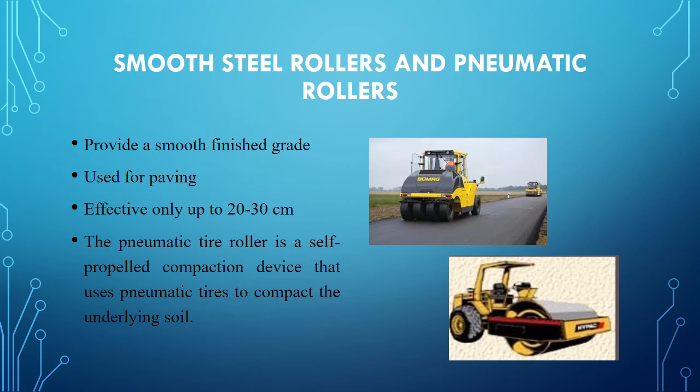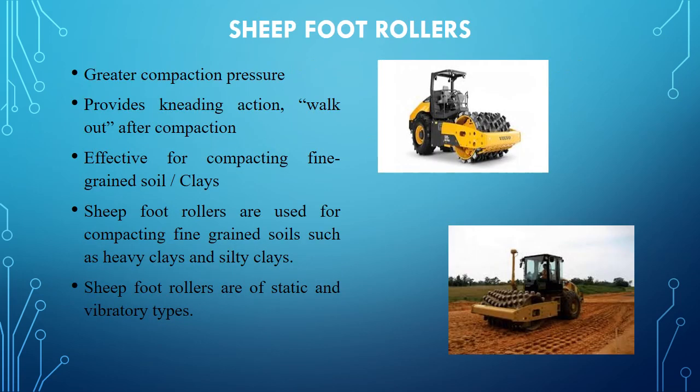The pneumatic tire roller is a self-propelled compaction device that uses pneumatic tires to compact the underlying soil. Here is the picture showing the pneumatic tire roller — we can see the smooth pneumatic tires used to compact the underlying soil. This is also the picture showing the smooth-wheeled roller, whose wheels are smooth.